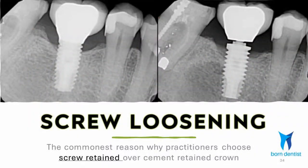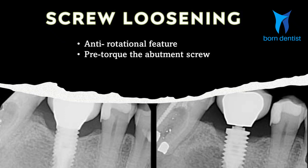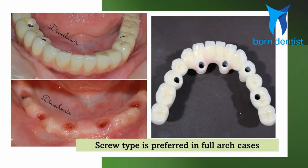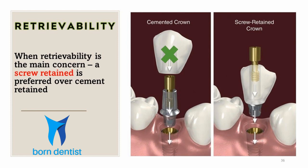The most common reason a practitioner chooses screw retained is because of fear of screw loosening complications. When screw loosening happens with cement retained, it is frustrating for the restorative dentist to manage, whereas with screw retained it is easy to correct. Screw loosening was common with external hex and platform-matching implants, but newer internal hex connection and platform switching has greatly reduced this, and it can be almost completely prevented by torquing the abutment screw. In all full mouth cases, screw retained is preferred because it can be easily managed if any complications occur. In summary, the screw retained crown is the restoration of choice when retrievability is the concern.